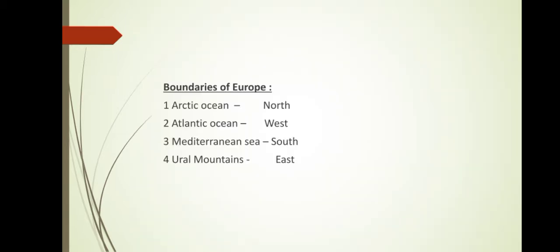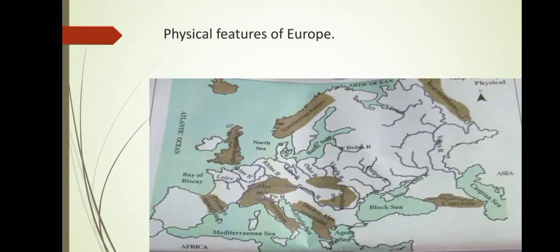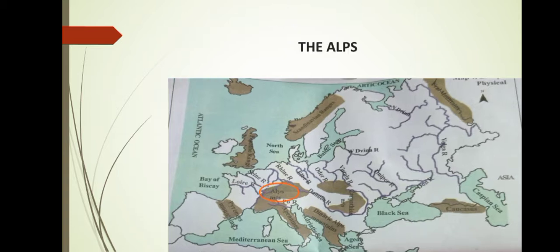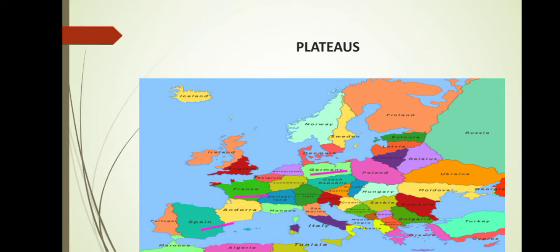Now let us talk about mountains, plains and rivers. Europe has several snow-capped mountains. The Alps is the most important mountain range of Europe. The Caucasus Mountains, which lies between the Caspian Sea and the Black Sea, form the southern boundary of Europe. There are no large plateaus in Europe. Some small plateaus are there in France, Germany and Spain.